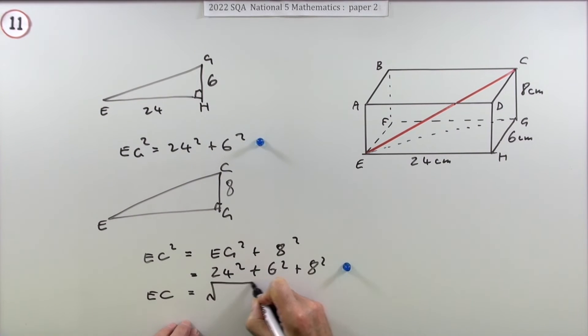Then go on and find EC by doing the square root of whatever that lot comes to. So that comes to 676, and then do square root, and you get 26.